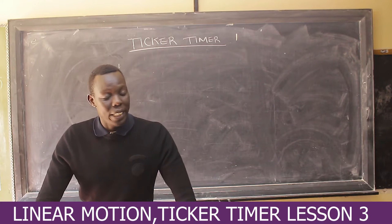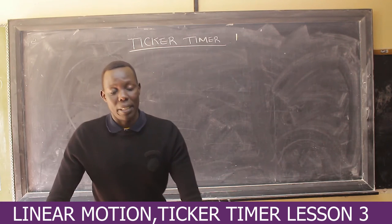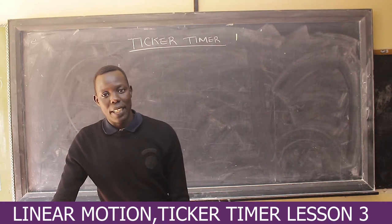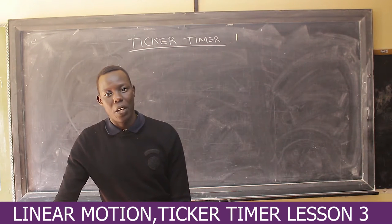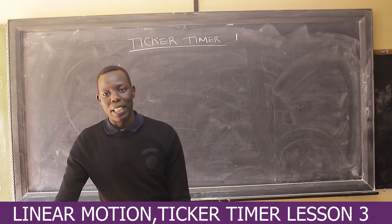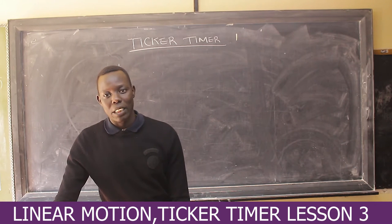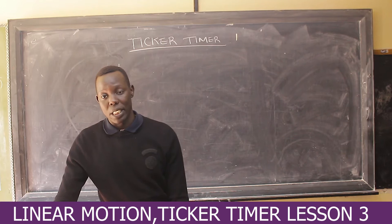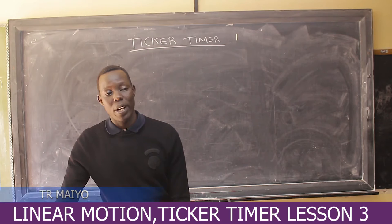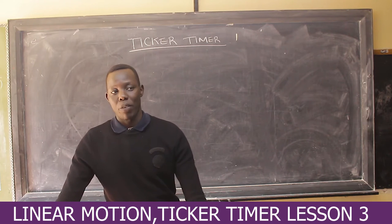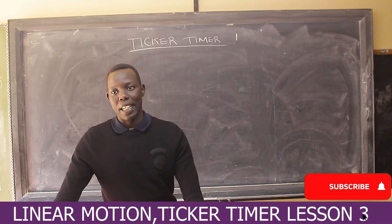From our previous lesson, we said that acceleration is the rate of change in velocity. Before you get acceleration, you must find the change in velocity and the time it takes for that velocity to change. The ticker timer is one of the ways we always use to find acceleration.